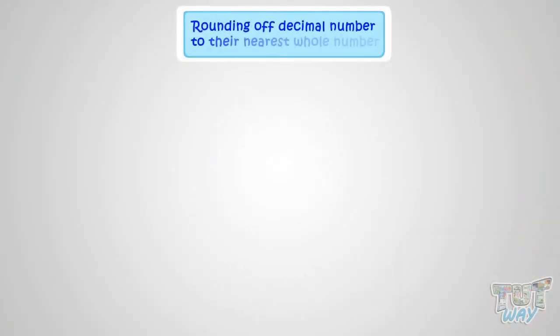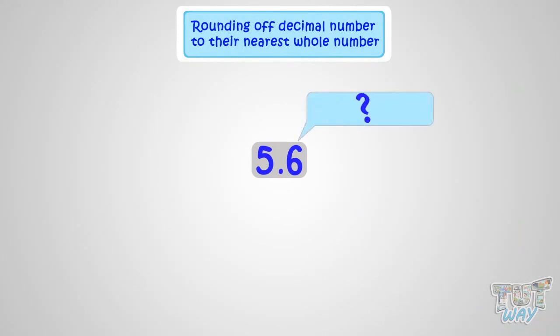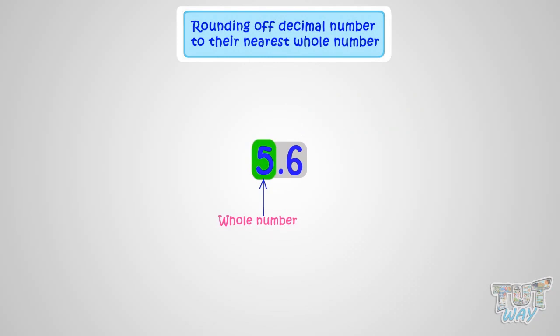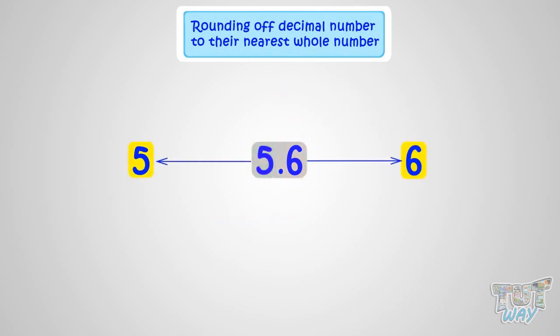Here we have a decimal number. It is 5.6. What does it mean? It means 5 and 0.6. That is, it has a whole number and a decimal number portion, and it is somewhere between 5 and 6.